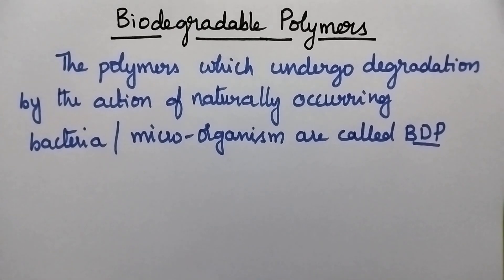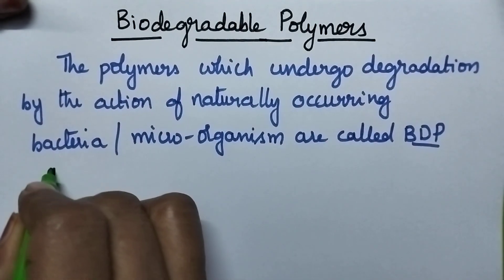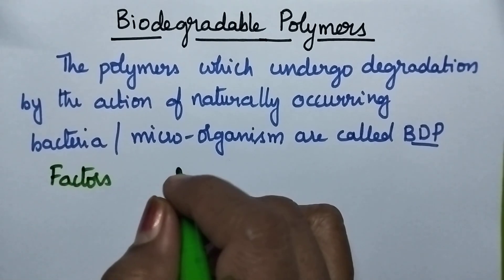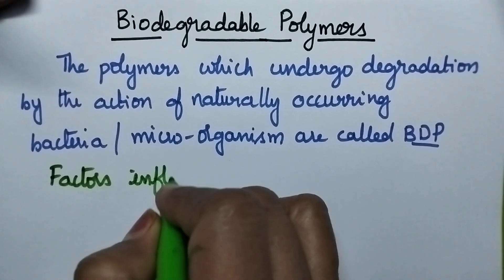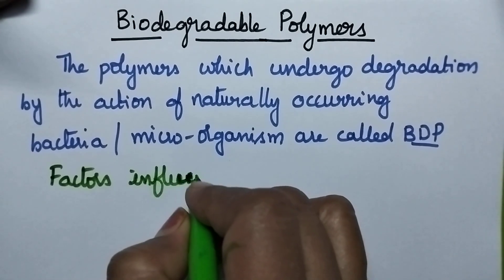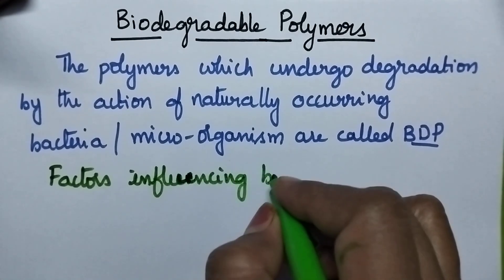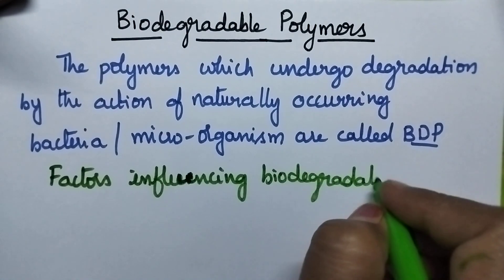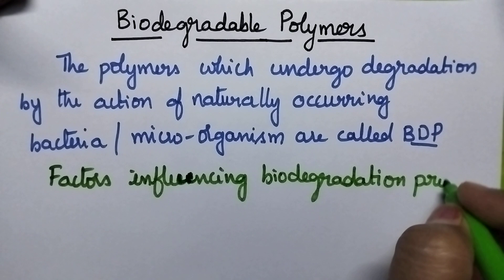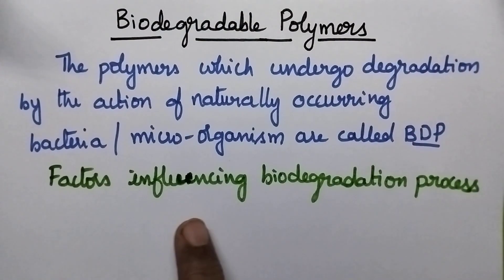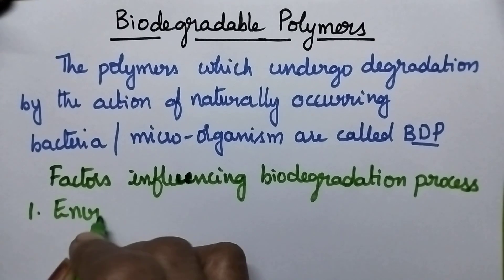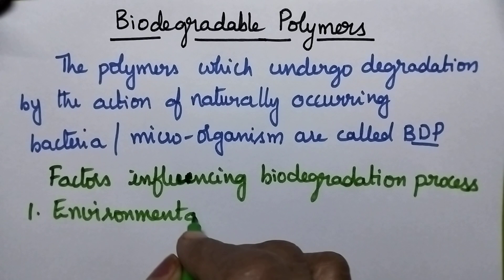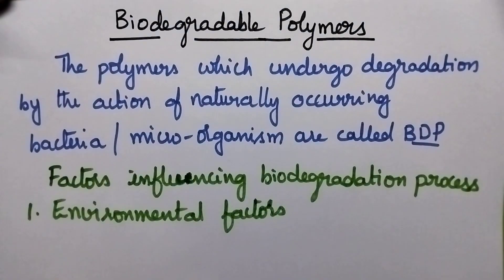Coming to the factors influencing the biodegradation process. The biodegradation process generally includes two factors: environmental factors and the second one is properties of polymers.